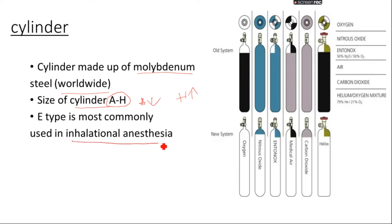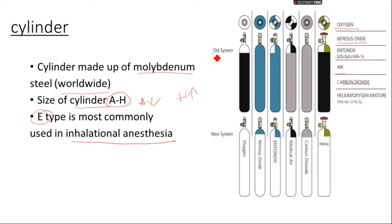Here you can see there are various gas types such as oxygen, nitrous oxide, Entonox, air, and carbon dioxide. The older system had a slender cylinder structure, but now according to the new system the design for oxygen and nitrous oxide cylinders has been updated.